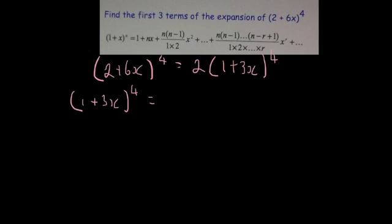and then it says nx, so n is equal to 4 and x is equal to 3x. So we're going to write 4 bracket 3x.